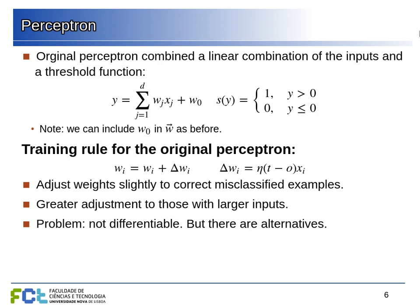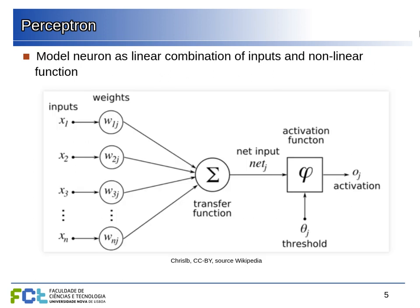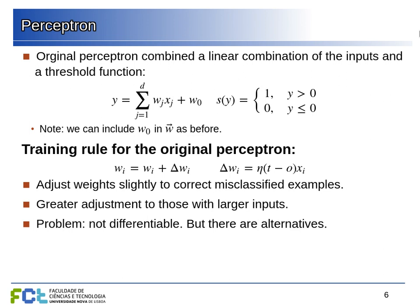If the neuron is firing incorrectly — giving a one when it should be zero or vice versa — we multiply that difference by the value of each input, then multiply by a small constant so that learning happens in small steps and things converge. This is what we use to update each weight. Basically, when the perceptron gives incorrect results we slightly change the weights to encourage the correct result; if it gives the correct result we do nothing.